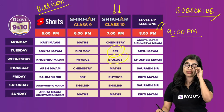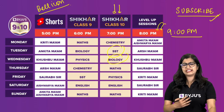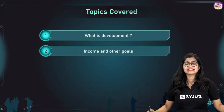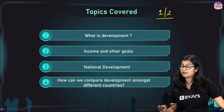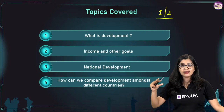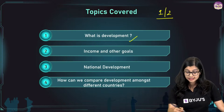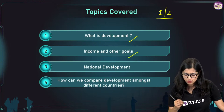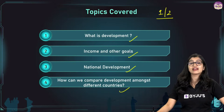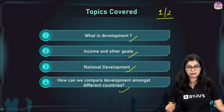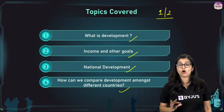I'm not very fluent in Hindi, which is why I mainly speak in English, but I'll try to give easy, relatable examples. Today we are covering part one of two parts of this chapter. The topics are: what is development, what is income, what are other goals related to development, what is national development, and how we compare countries as developed or not developed.